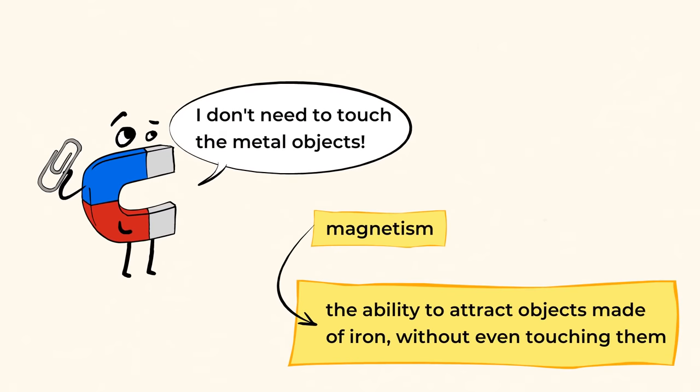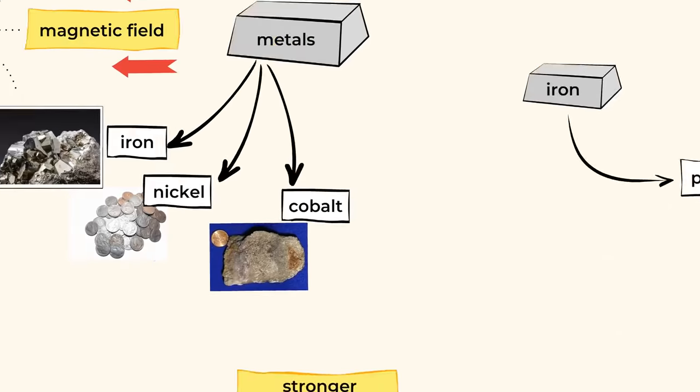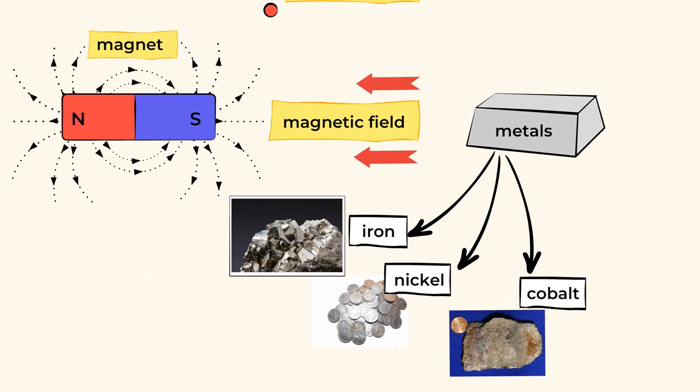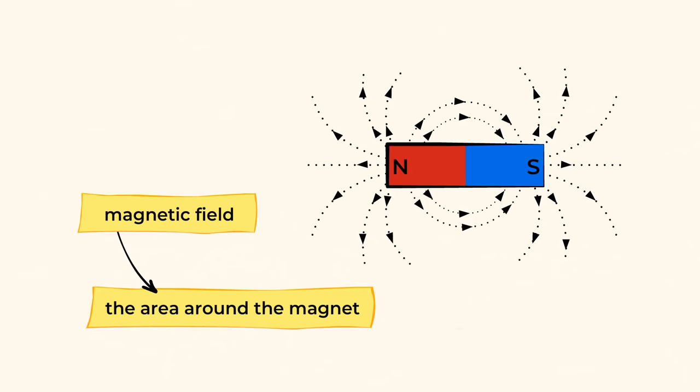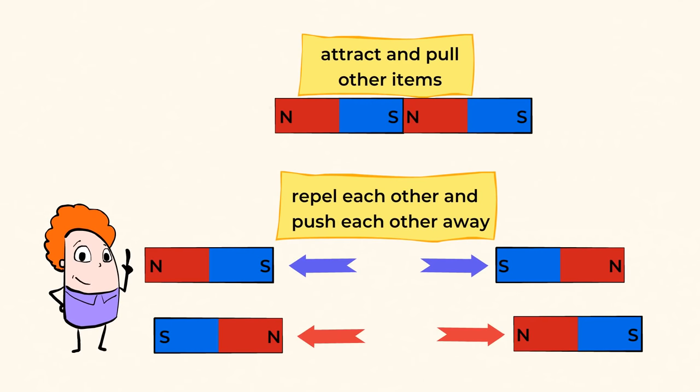Alright, let's review what we've learned. The ability to attract objects made of iron is called magnetism. And maybe you've noticed that magnets are different from other forces. They don't need anything pushing or pulling to make them work. The area around the magnet is called a magnetic field. And this field has forces that can attract or repel other magnets or metal objects.